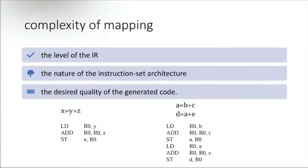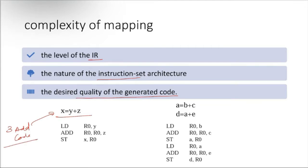Complexity mapping depends on the level of the intermediate code, the nature of the instruction set architecture, and the design quality of generated code. You may remember three-address code, which is an intermediate representation. If we want to convert three-address code into assembly-like code, it would look like: load Y into register R0, then add R0 and Z.